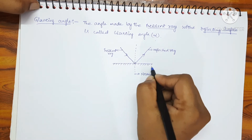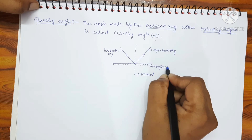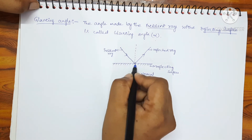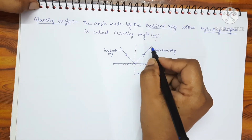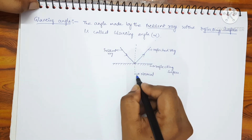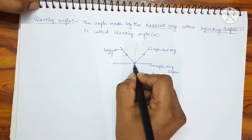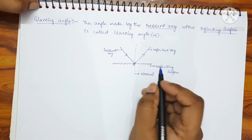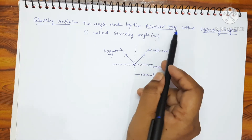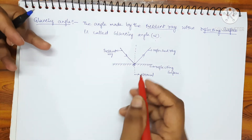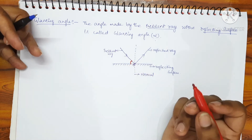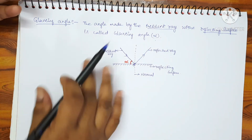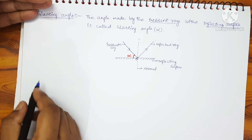A ray of light is incident on a plane mirror and reflected back into the same medium. A line drawn perpendicular to the reflecting surface is called the normal. The point where the incident ray hits the reflecting surface is called the point of incidence. The angle made by the incident ray with the reflecting surface is called the glancing angle, denoted by the symbol alpha.